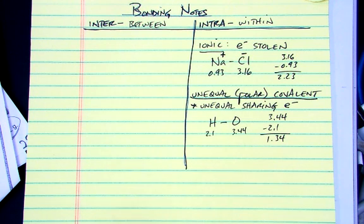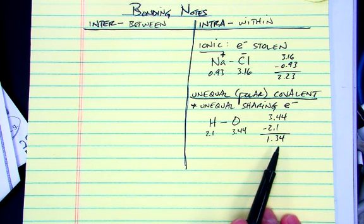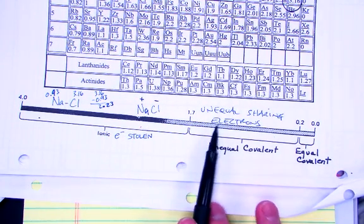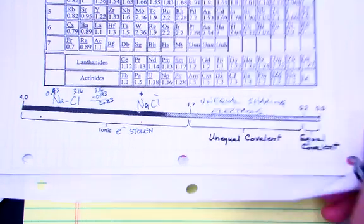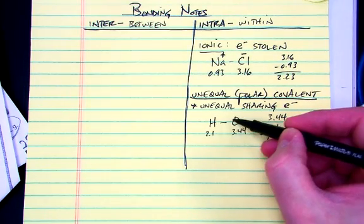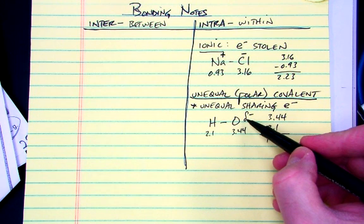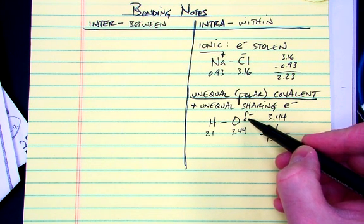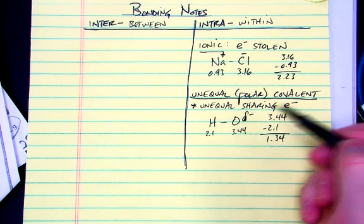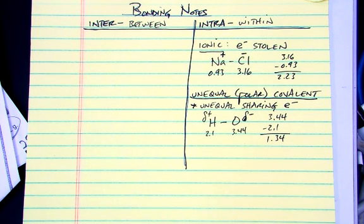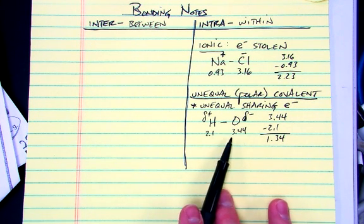And again, what we do, we take this electronegativity difference. We look on our periodic table of electronegativities and it says that we have an unequal covalent bond. So looking here, we're in 1.34 area. Unequal covalent bonds, unequal sharing of electrons. So the oxygen is going to have the electrons in this bond a little bit more of the time. So we said it's going to take on that partially negative character. This symbol here is like a lowercase delta and it means partial. And then hydrogen has the electrons a little bit less of the time. So it's going to have a partial positive charge. So that's what's happening with polar covalent bonds there, or unequal covalent bonds.